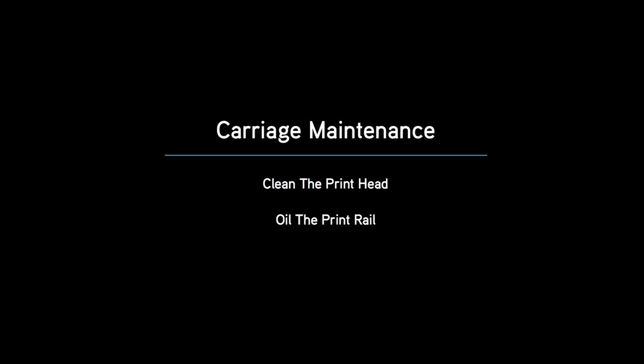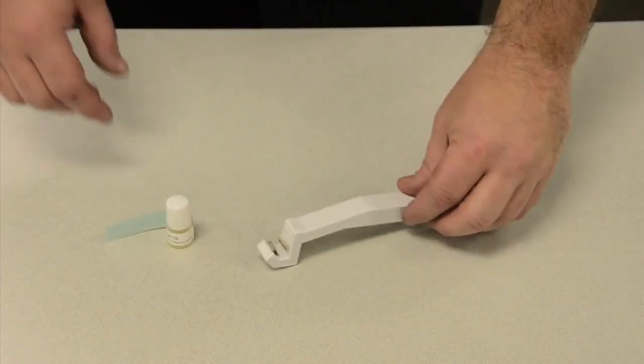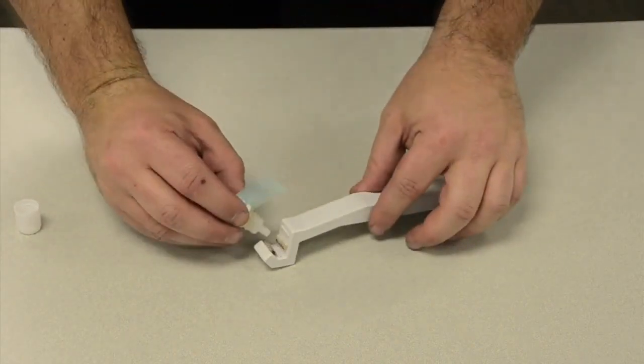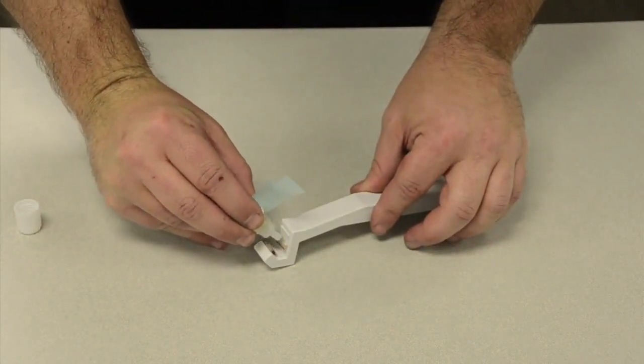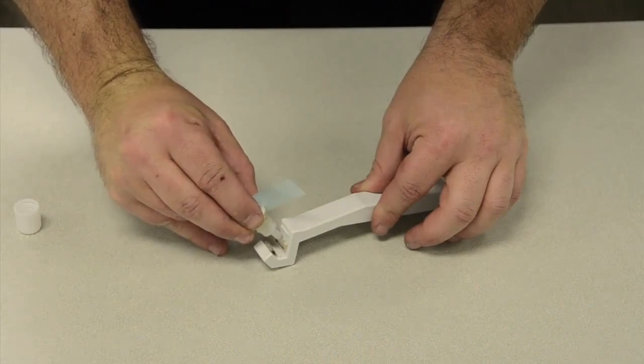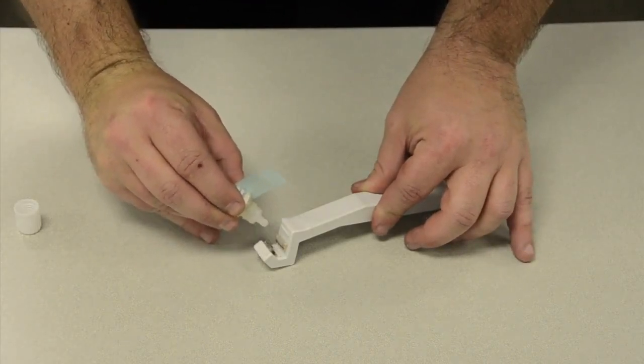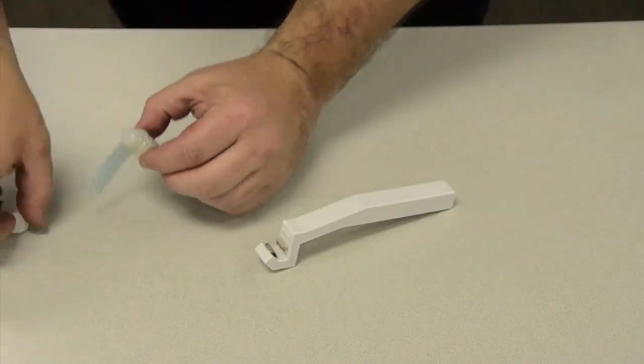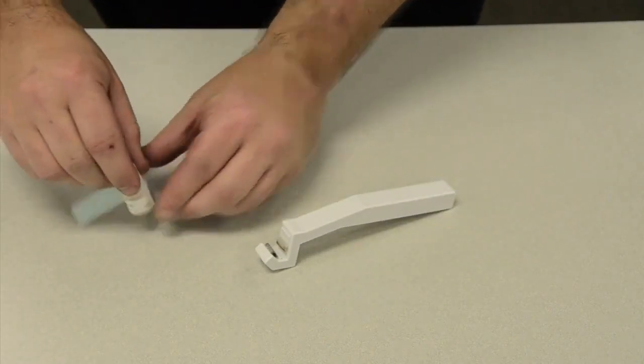Now we will cover oiling the print rail. To do this, you will need your carriage rail tool and the carriage rail oil. Gently squeeze the bottle of carriage rail oil and place a few drops on either side of the felt tips of the carriage rail tool. To avoid spilling any of the carriage rail oil, please replace the cap.